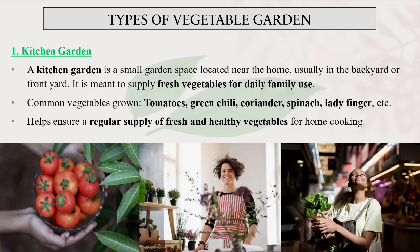How many types of vegetable gardens are there? Basically, there are five types of vegetable gardens that we will be studying about. Let's start with the first one — it's kitchen garden.